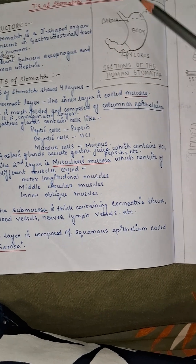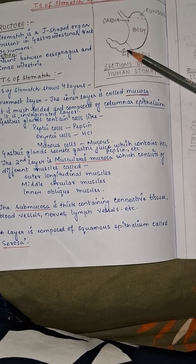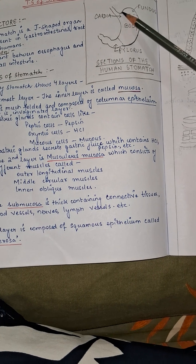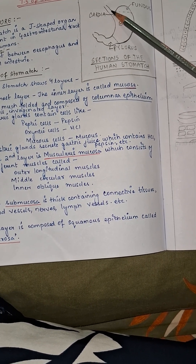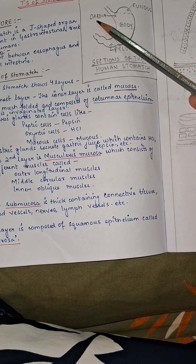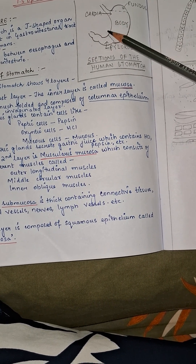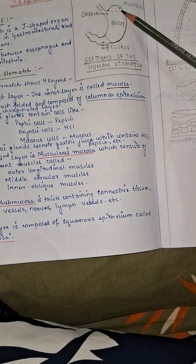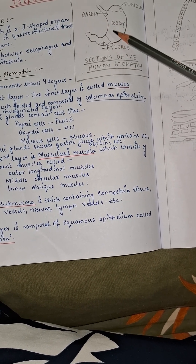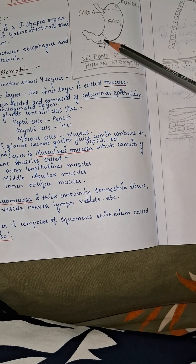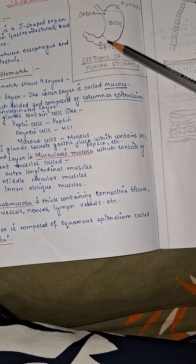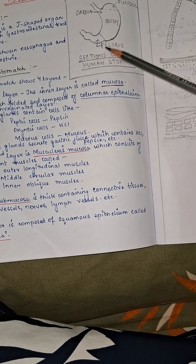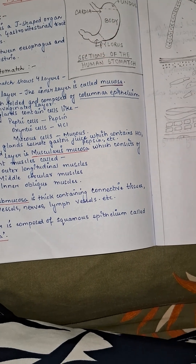A hollow J-shaped organ present between the esophagus and intestine is named the stomach. The stomach has various parts. The upper part is the fundus. Just as the esophagus ends and just above the body part, that portion is the cardia. The main part or middle portion just below the fundus is the body part, and the portion close to the intestine is the pylorus.